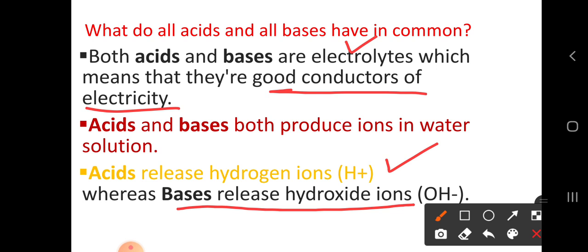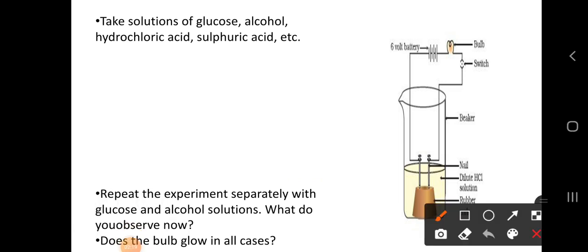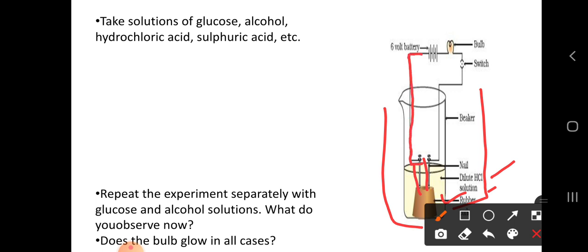I hope there is no confusion till now. Let us do one activity to understand whether acids and bases are good conductors of electricity. We have a diagram on screen showing a beaker made of glass in which we have poured a dilute HCl solution. In that beaker we have placed a rubber cork with two iron nails, and connected them to a battery, bulb, and switch.